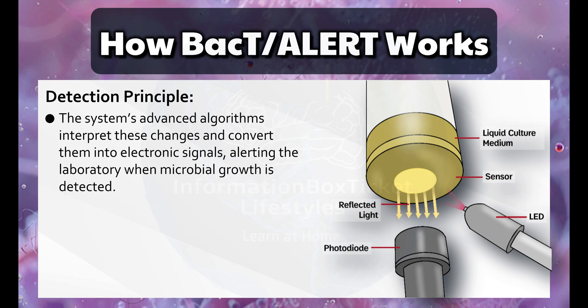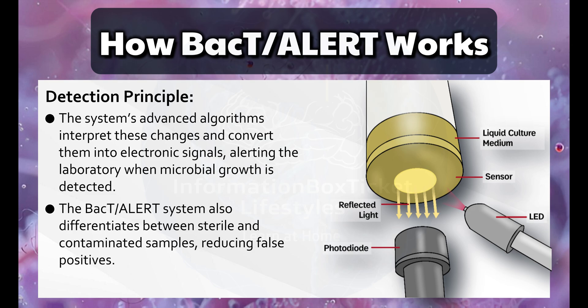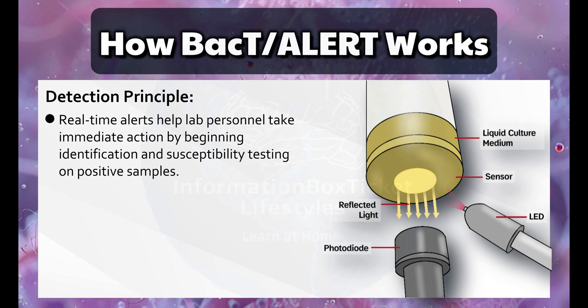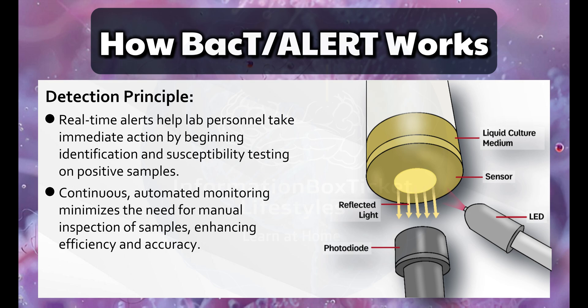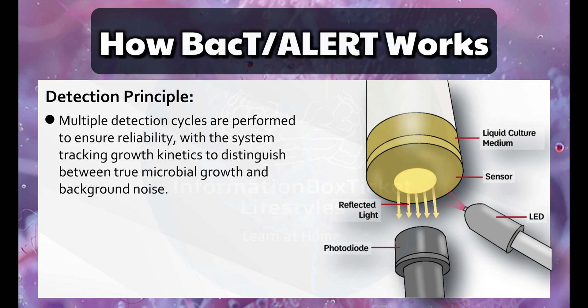The system's advanced algorithms interpret these changes and convert them into electronic signals, alerting the laboratory when microbial growth is detected. BactiAlert also differentiates between sterile and contaminated samples, reducing false positives. Real-time alerts help laboratory personnel take immediate action by beginning identification and susceptibility testing on positive samples. Continuous automated monitoring minimizes the need for manual inspection, enhancing efficiency and accuracy. Multiple detection cycles are performed to ensure reliability, with the system tracking growth kinetics to distinguish between true microbial growth and background noise.